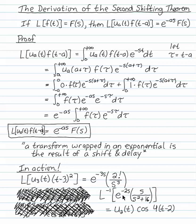Wrapping that in an exponential just means I'm shifting and delaying the cosine of 4t. Shift the cosine to cosine of 4 times t minus 2. Delay it for 2 seconds. That's where this transform came from.